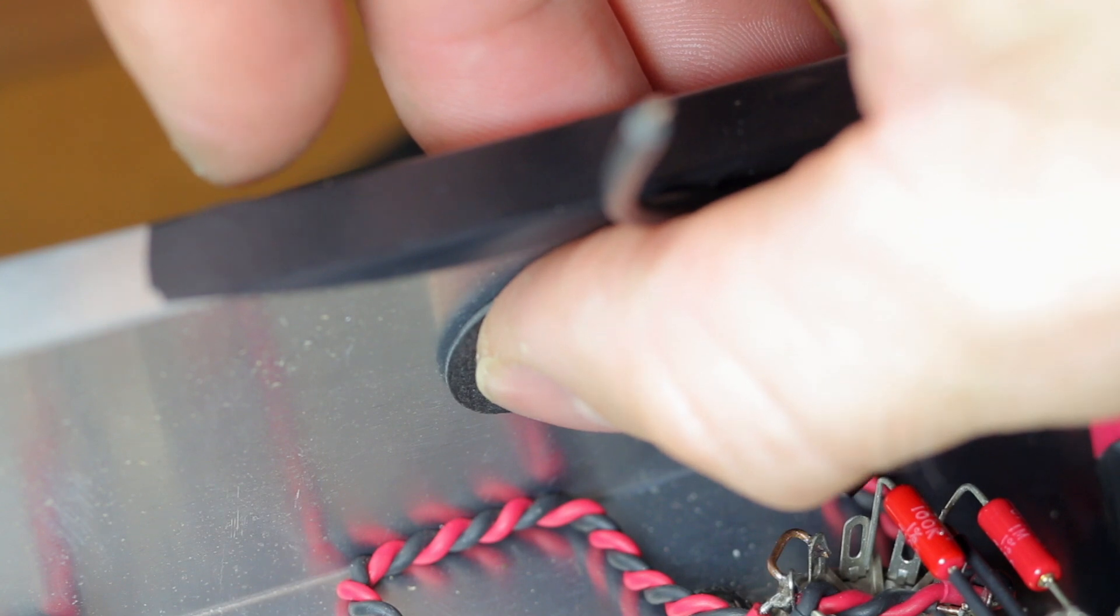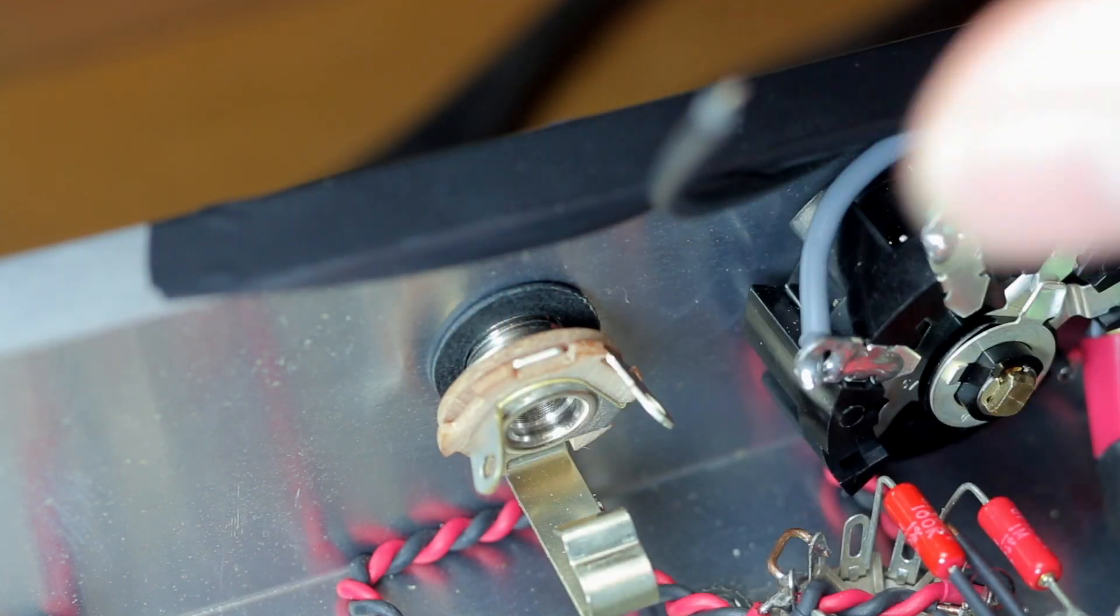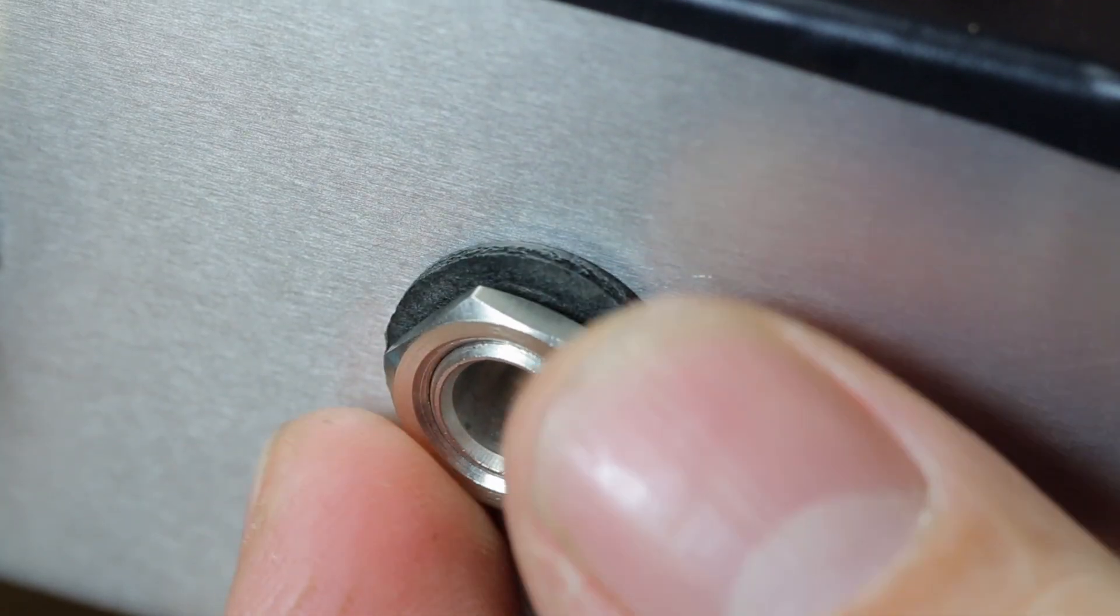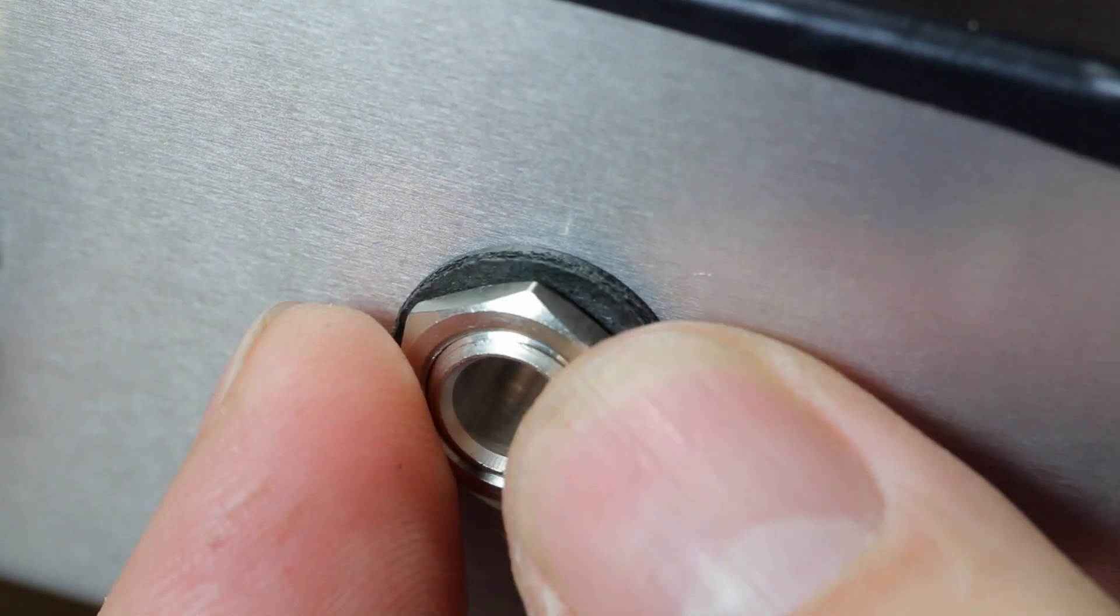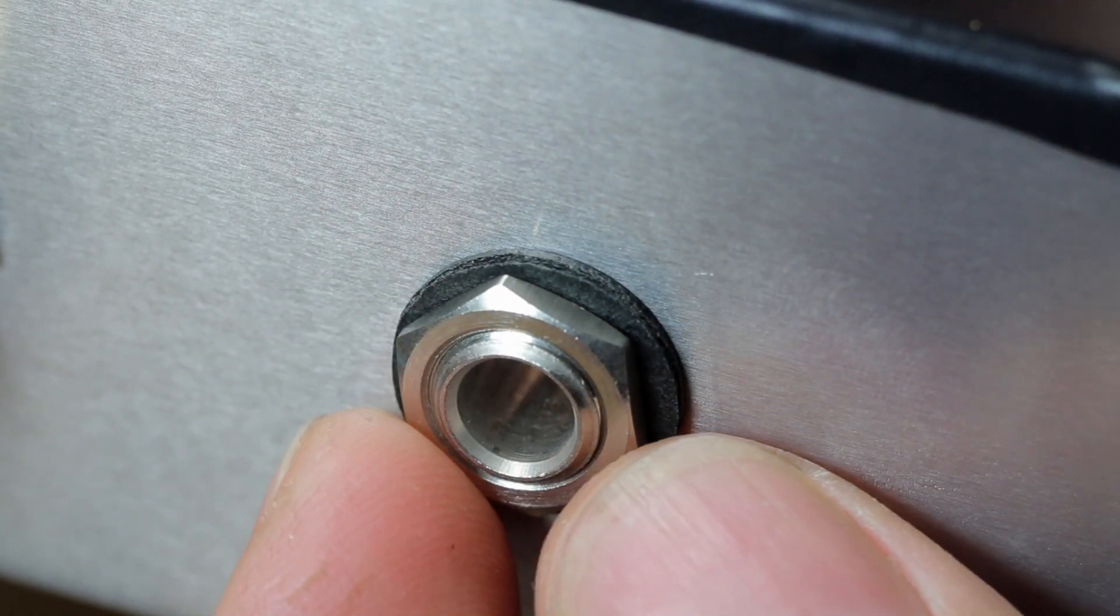It's best if the output jack is insulated. I'm using the shoulder washer on the inside, and I'm just using a regular fiber washer on the outside.